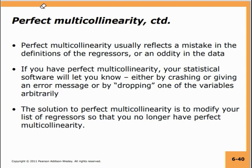To avoid the dummy variable trap, when using dummy variables in your models be sure you have not included a dummy for every single category. Leave out one category — that will be the reference category with respect to which all other coefficients are determined. Perfect multicollinearity usually reflects a mistake in the definition of the regressors or an oddity in the data. Your statistical software will notify you by crashing, giving an error message, or dropping one of the variables. The solution is to drop one of the collinear variables.